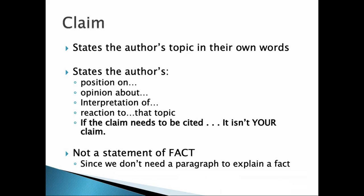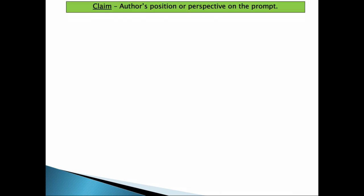And so the PEA paragraph is going to start with a claim. This is where the author is going to state their topic in their own words, and it's going to state the author's position on that topic, or maybe their opinion, or their interpretation, or their reaction to. The claim is not a statement of fact, because if it was, we wouldn't need an entire paragraph to explain it. We wouldn't need a paragraph to explain the fact that the kitchen table is where so-and-so does their homework. That's a fact. We don't need to persuade anybody. We don't need to offer analysis. But if someone wanted to argue that the kitchen table was the best place to do homework at, now we're moving into a more appropriate claim statement. Because that's the author's topic, which is location of doing homework, and it is the author's opinion on or interpretation of that topic. And so we're going to start our PEA paragraph with that claim.